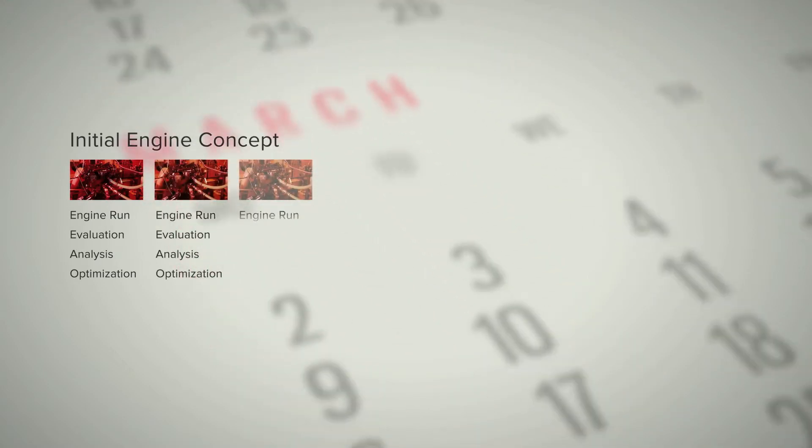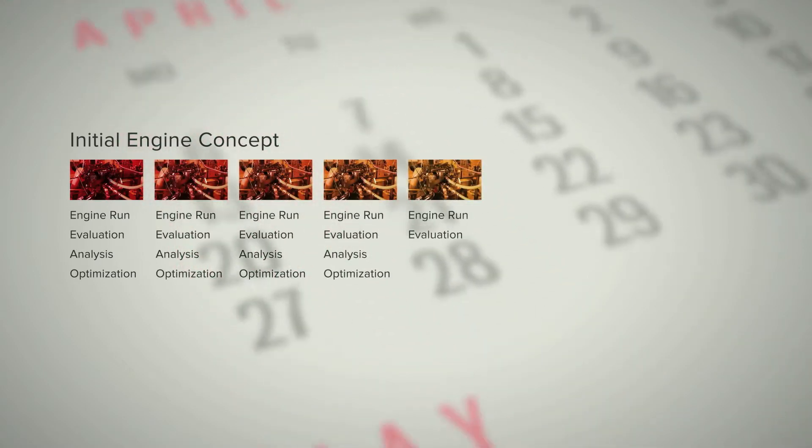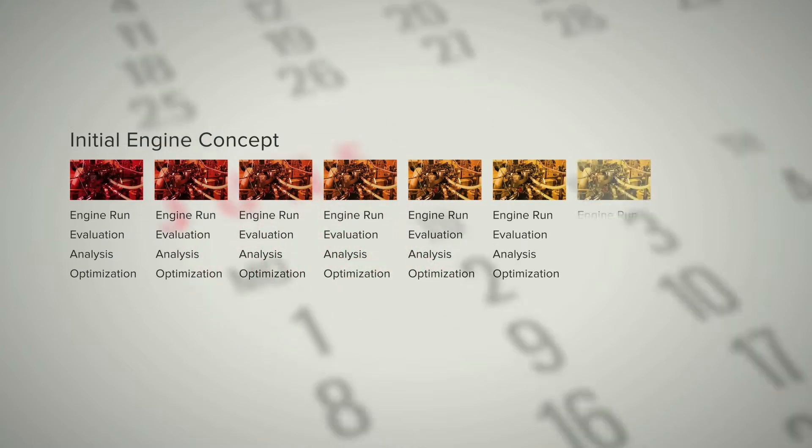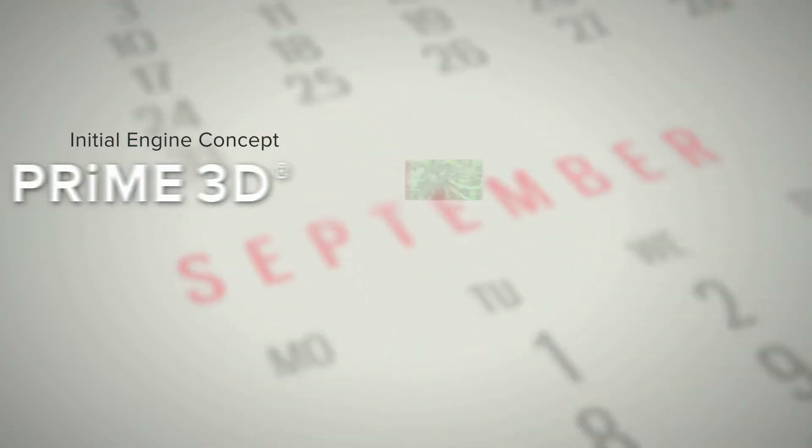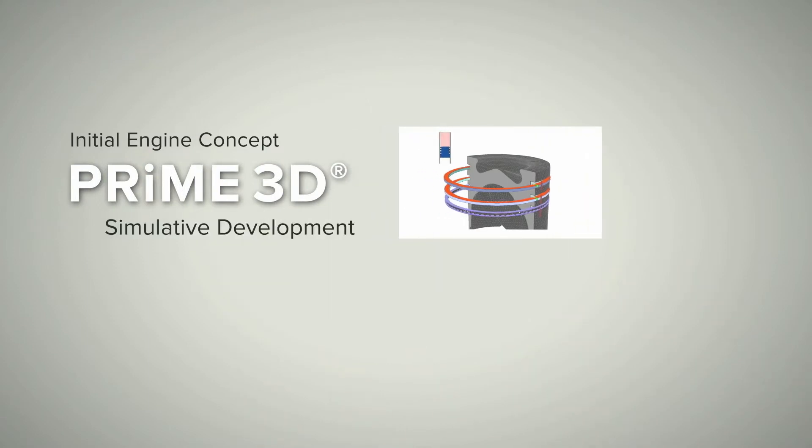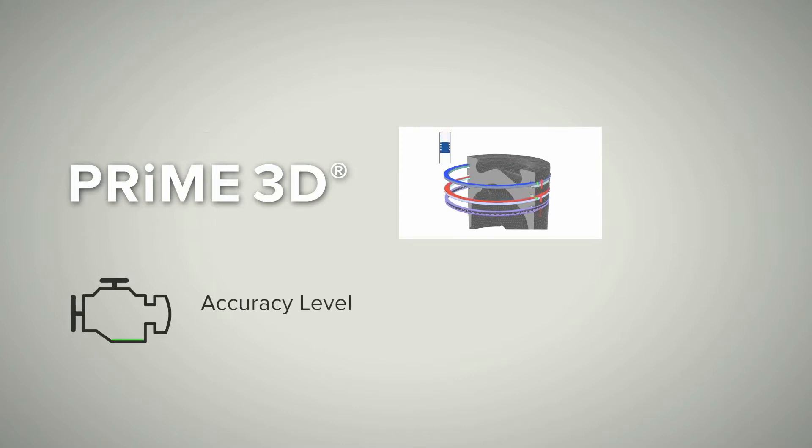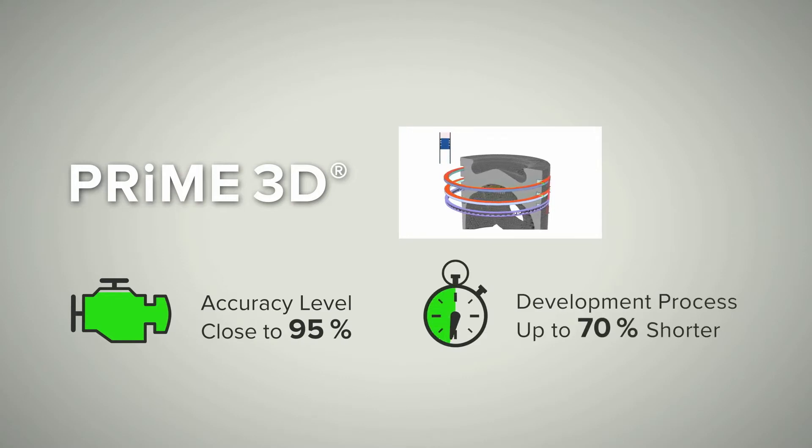Traditional engine development processes are time and cost intensive, requiring many iterations of design, prototyping, and testing. The sophisticated Prime 3D software enables the optimization of the piston and piston ring performance with an accuracy level close to 95%. This allows up to 70% shortening of the development process.